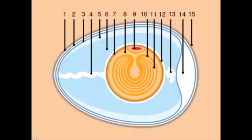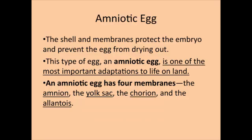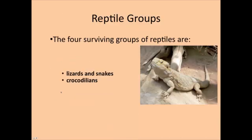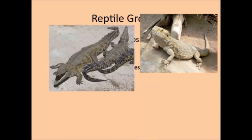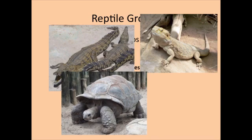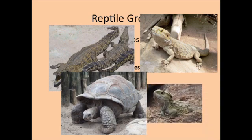Here's a picture of the amniotic egg. The really important part is the yolk sac — that's going to provide the food and nutrition for the growing embryo. And the amnion is really going to protect it from drying out on land. As for groups of reptiles, there are four surviving groups: lizards and snakes, crocodiles (which also include alligators), tortoises and turtles, and finally the tuatara, which is really only found in New Zealand and New Guinea.